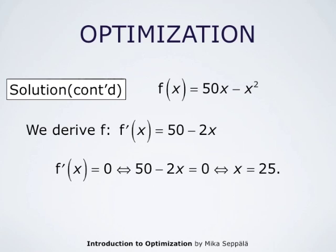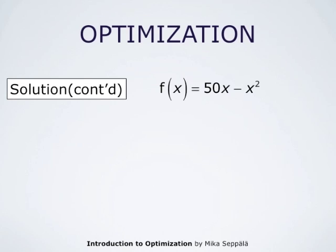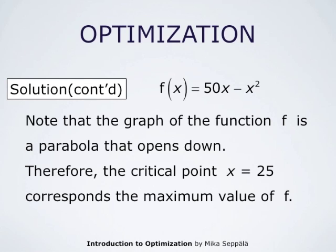Next we have to figure out whether this value corresponds to a maximum or minimum value of the function. We use the first derivative test. The derivative 50 − 2X is positive if X is less than 25, and negative if X is greater than 25. This means that the critical value X = 25 is a global maximum of the function F. We may also deduce this because 50X − X² is a downward-opening parabola, so its one critical point X = 25 corresponds to the maximum value of F.